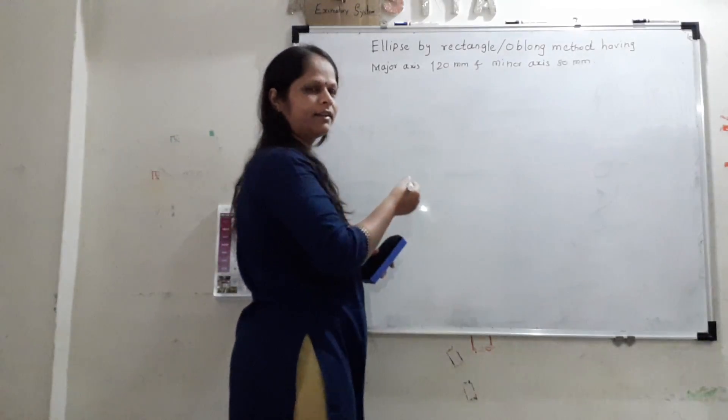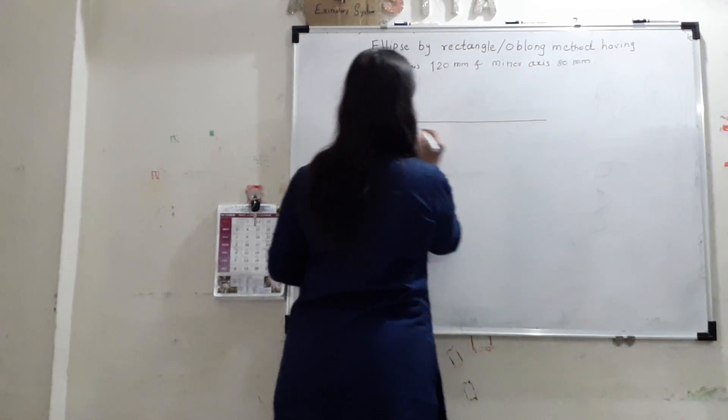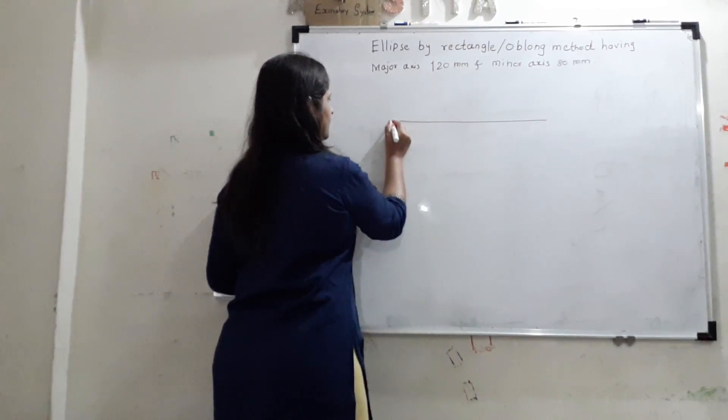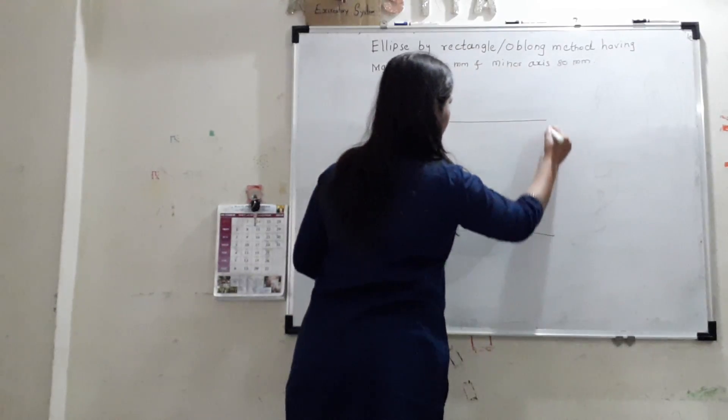We will create a rectangle first. This will be the length of rectangle, that is major axis. And height of rectangle will be a minor axis. We will create a rectangle first.